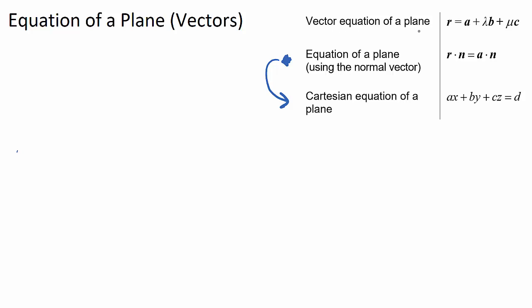The vector equation of a plane is very similar to the vector equation of a line. The vector equation of a line was R = A + tB, where R stands for any position vector on our line, A was a known fixed position vector on our line, t was our parameter, and B was our direction vector. It is quite similar for the vector equation of a plane, where R is now any position vector on our plane.